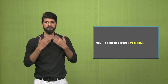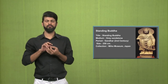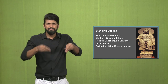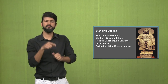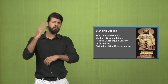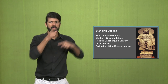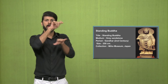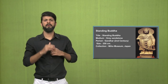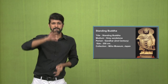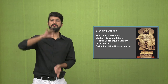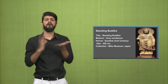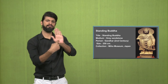Now we will discuss the third sculpture. The third sculpture is the Standing Buddha. The medium is grey sandstone. The period of this sculpture is the Gandhara period, when the Kushan dynasty ranged up to Afghanistan, Pakistan, and northern India. This was done in the second century. The size is 250 cm, and it is exhibited at the Miho Museum in Japan.